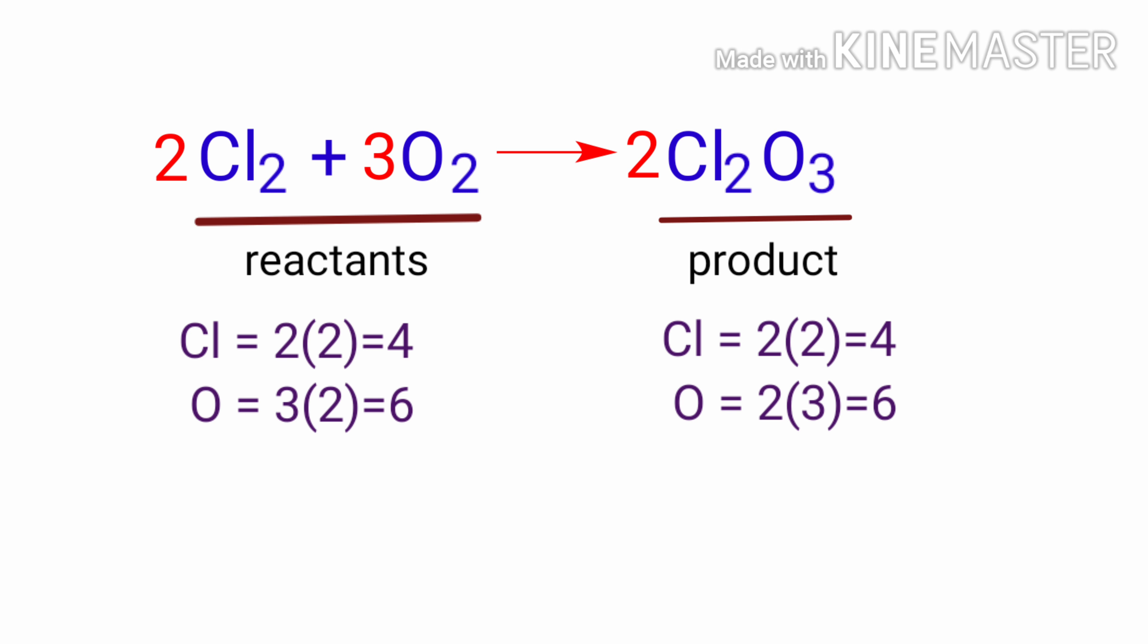The equation is now balanced. There are four chlorine atoms and six oxygen atoms on both sides.